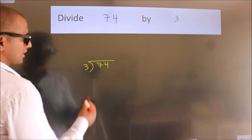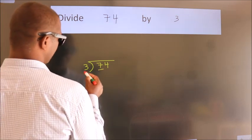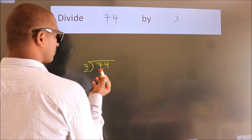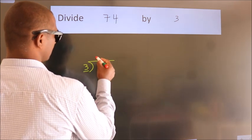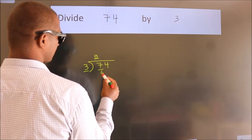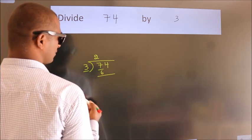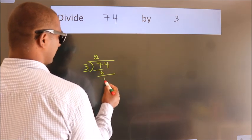Next. Here we have 7, here 3. A number close to 7 in 3 table is 3 twos 6. Now, we should subtract. We get 1.